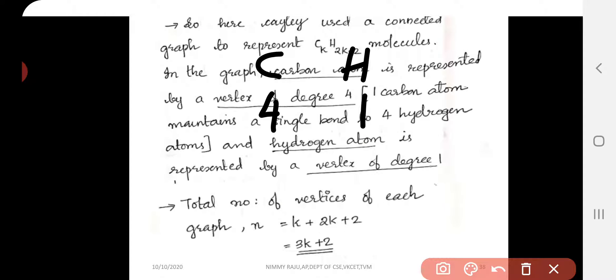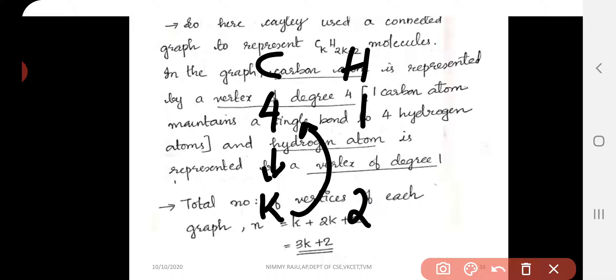The number of carbon atoms is k, meaning k vertices have degree 4. The number of hydrogen atoms is 2k+2, meaning 2k+2 vertices have degree 1.